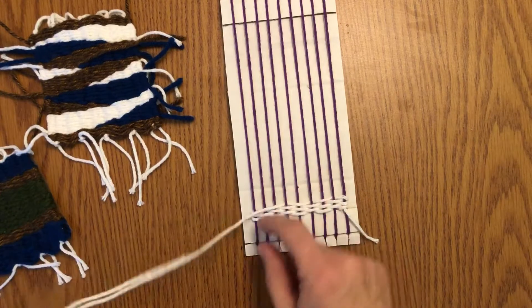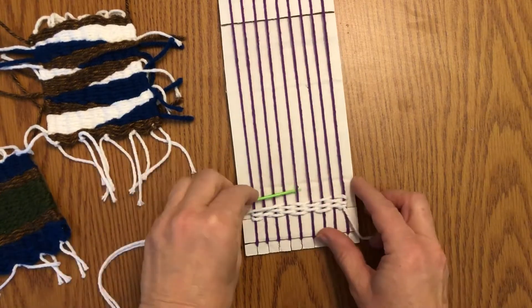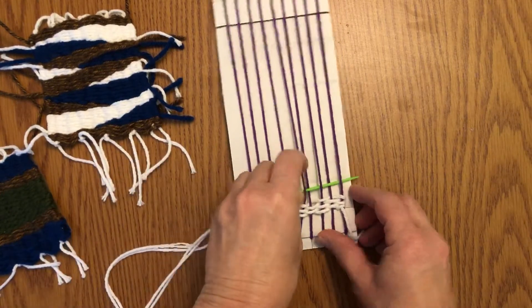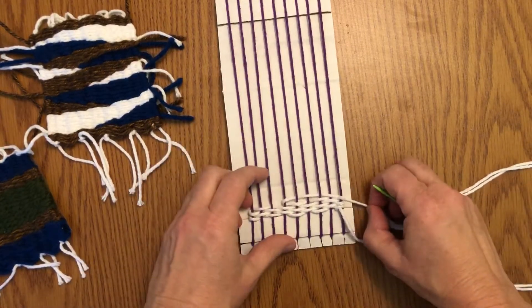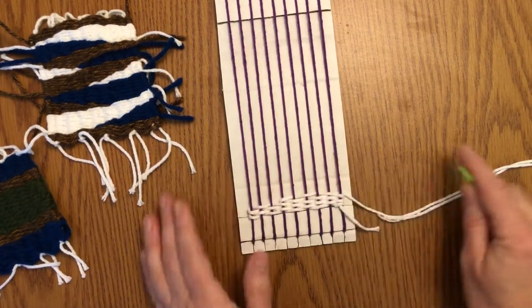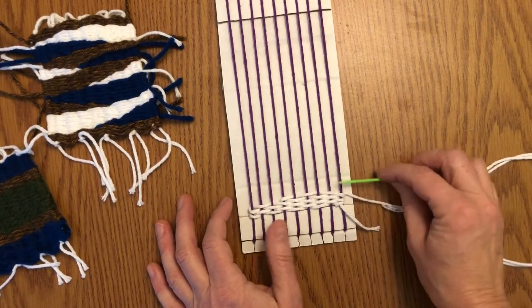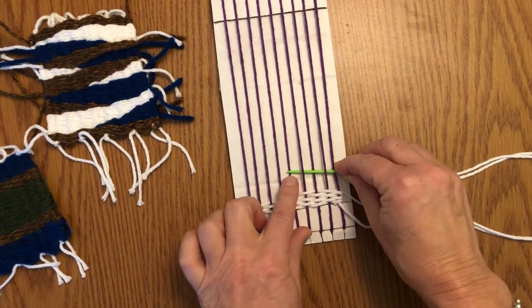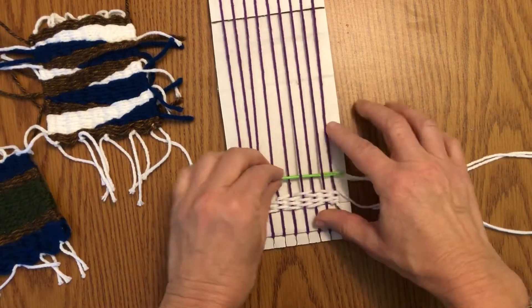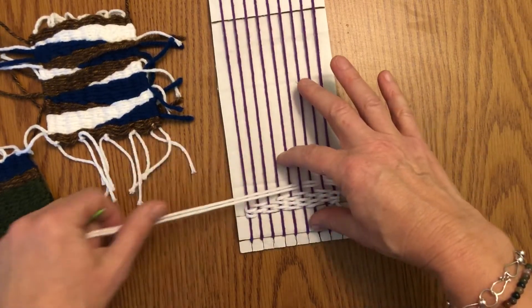But for this next row, when I go across I'm going to end one sooner. So I'll go over under, over under, and I want to end on that one, but I just have to be careful because I actually have to go under it to come back.